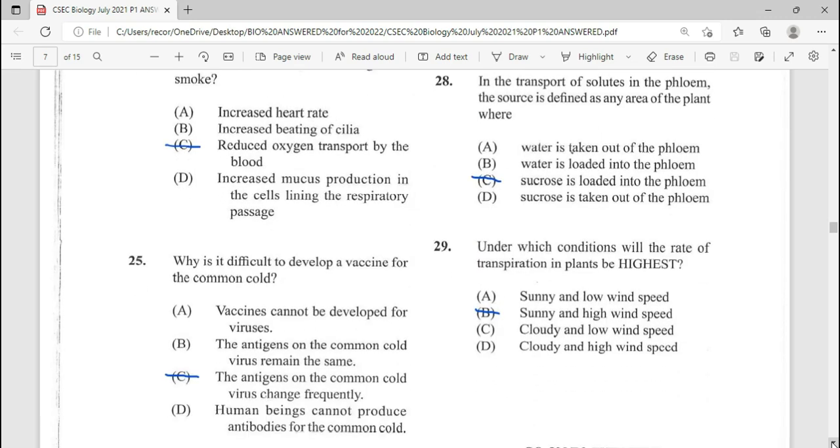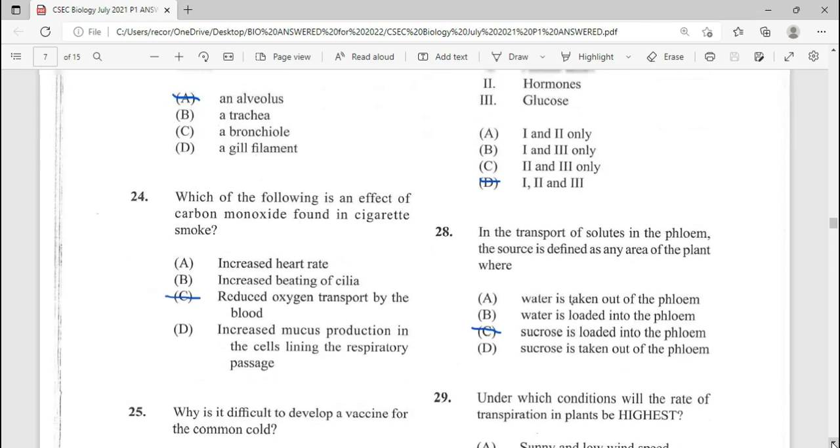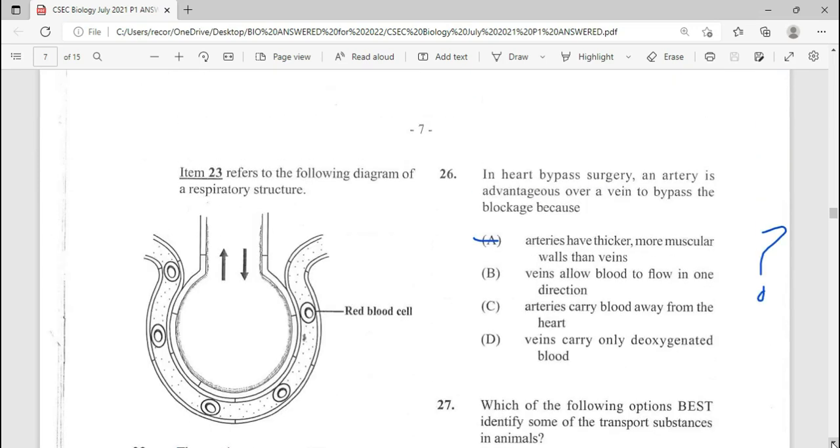25, why is it difficult to develop a vaccine for common cold? Our answer there being, the antigen on the common cold virus change frequently. Here's our answer for 25.